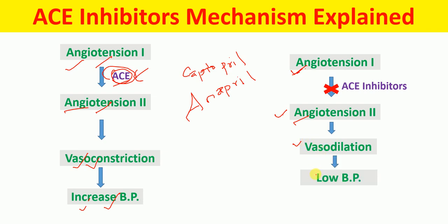Vasodilation means low blood pressure. So, how do ACE inhibitors work? They competitively inhibit the enzyme ACE, meaning angiotensin 1 is not converted into angiotensin 2, resulting in vasodilation and therefore low blood pressure. This is the mechanism of ACE inhibitors.